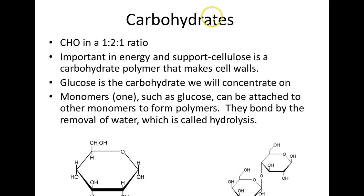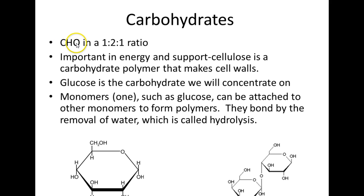The first class of molecules is the carbohydrates. CHO is a good way to shorten it, and it's in a one-to-two-to-one ratio. That means for every carbon, there are two hydrogens and one oxygen. So if there are six carbons, there will be 12 hydrogens and six oxygens. If there are four carbons, there will be eight hydrogens and four oxygens — one-to-two-to-one ratio always. They're important in energy. Carbohydrates are simple sugars like glucose, and also cellulose, which is a starch.